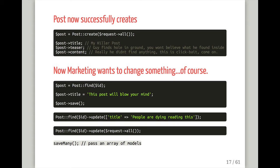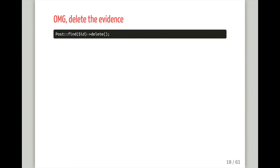When you need to update something, finding the post is as easy as calling the find method. Then you set the title and call save. You can also do it in one line using the update method and passing an array — similar to how you do create. You can also pass Request::all() to update. And if you have a collection of models, you can use saveMany.